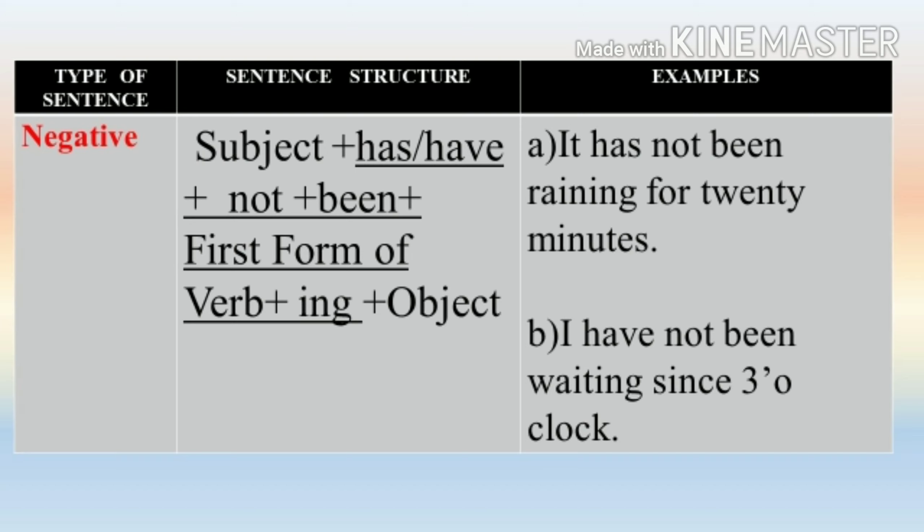Now let us see what is the rule for writing a negative sentence. The rule is: subject plus has or have plus not plus been plus first form of the verb plus -ing plus object. Jaise ki aap dekh sakte hain, humne affirmative sentence se negative sentence banate waqt kewal yahan not ka use kiya hai — humne apne helping verb has ya have ke baad not ko add kar diya hai. For example: 'It has not been raining for 20 minutes.' 'I have not been waiting since 3 o'clock.'